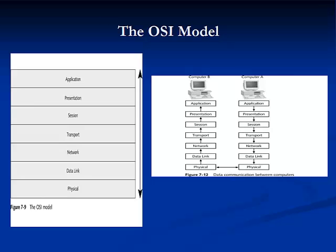In the early 1980s, ISO created the Open System Interconnection, or OSI, model for understanding and developing computer-to-computer communications. This model divides communication systems into seven layers: the physical layer, data link, network, transport, session, presentation, and finally the application layer — layers one through seven. Each layer has its own set of functions and interacts with the layers below and above it.